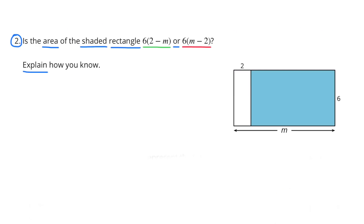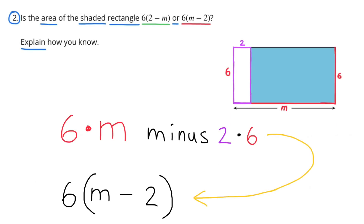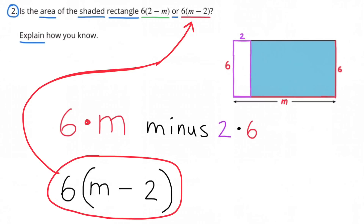Number 2: Is the area of the shaded rectangle 6 times (2 minus M) or 6 times (M minus 2)? The dimensions of the larger rectangle are 6 times M, and the dimensions of the smaller rectangle are 6 times 2. If you remove the smaller rectangle from the larger, that would be 6M minus 6 times 2, which is the same as 6 times (M minus 2). So the expression representing the shaded area is 6 times (M minus 2).